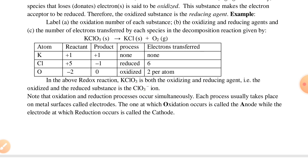In the above redox reaction, potassium chlorate is both the oxidizing and the reducing agent. That means the ClO3 minus ion is both oxidized and reduced. Note that oxidation and reduction processes occur at the same time simultaneously.